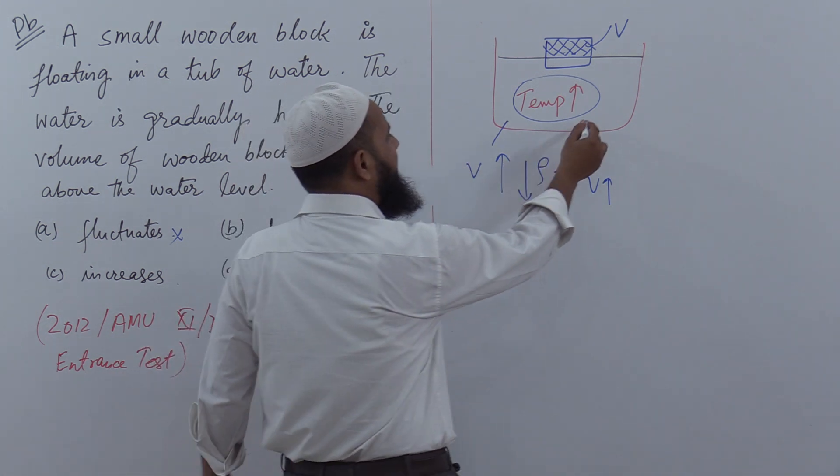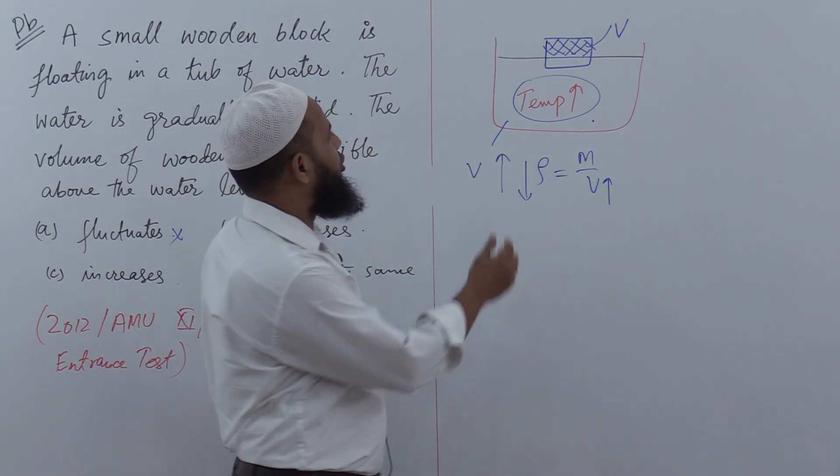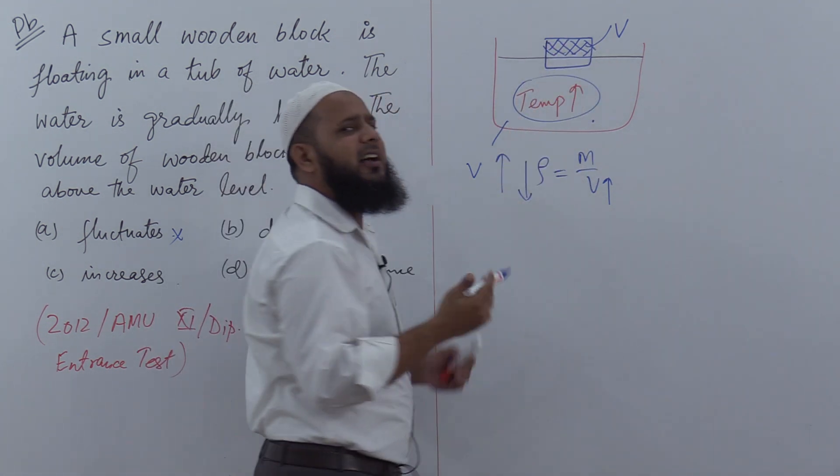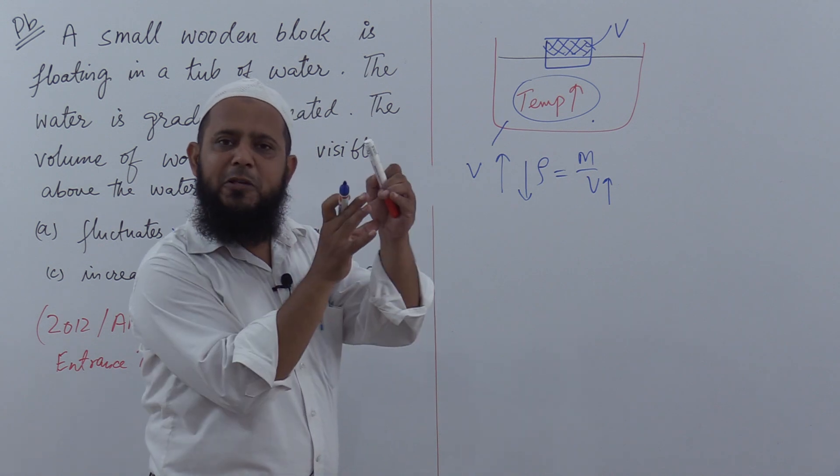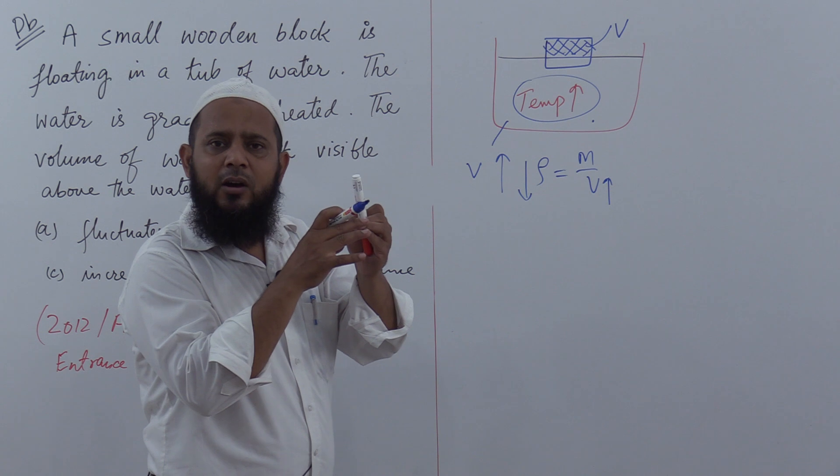When the fluid density decreases, where will the wooden block go? Will it go down or up? Basically, it will sink lower. It will start to go down. So this volume...